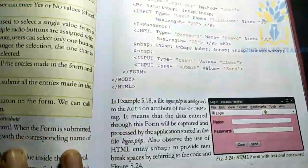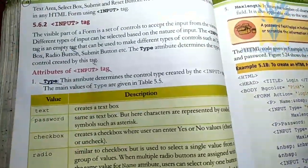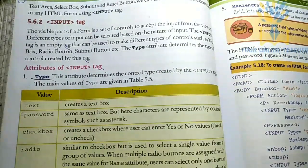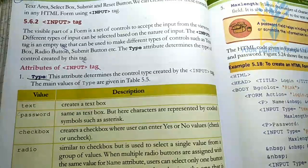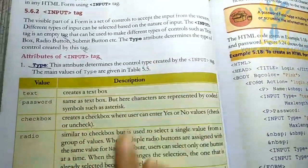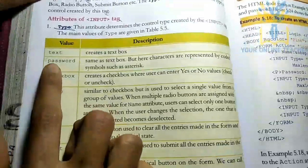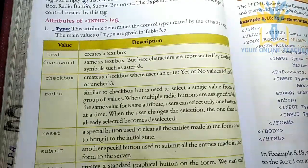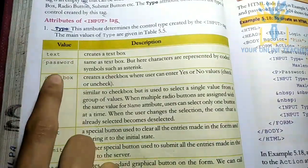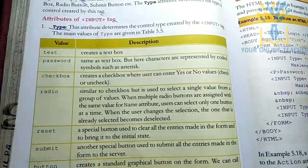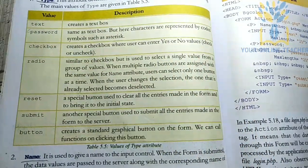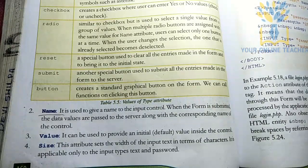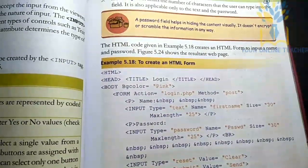Next is form controls. If you have a form control, you can control text input, select boxes, and more. The main element is the <input> tag. The main attribute of input is type. If type is 'text', you create a text box. If type is 'password', you create a password field. You can also set the name attribute and the maxlength attribute.